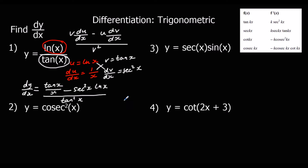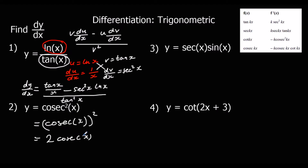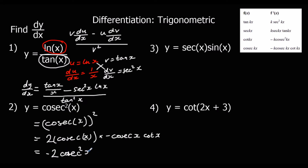Question two: we've got cosec squared x, which means cosec x all squared. We differentiate this using the chain rule — times by the power and take one off the power, giving 2 cosec x. Then multiply by the bracket differentiated: cosec x differentiates to minus cosec x cot x. Simplifying, we get minus 2 cosec squared x cot x.